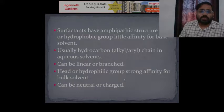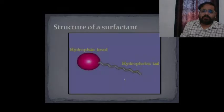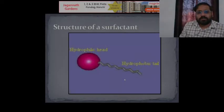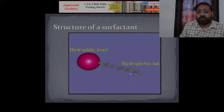Surfactants have an amphipathic structure: a hydrophobic group with little affinity for the bulk solvent, usually a hydrocarbon chain (which can be linear or branched), and a hydrophilic group with strong affinity for the bulk solvent, which can be neutral or ionic. The hydrophilic heads orient to one side and the hydrophobic tails are the hydrocarbon chains on the other.